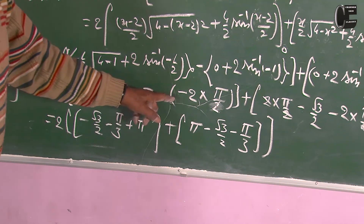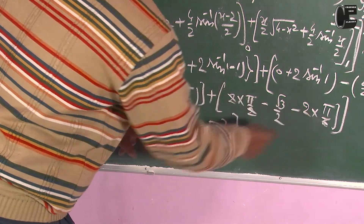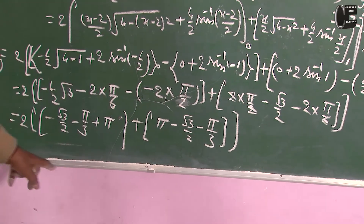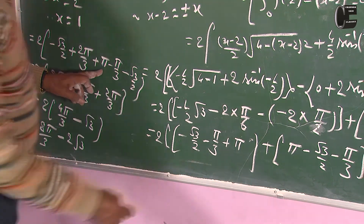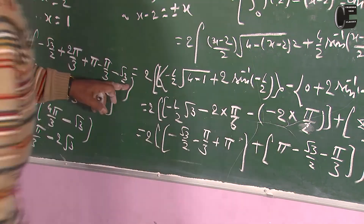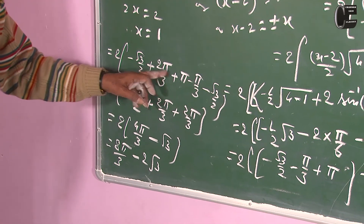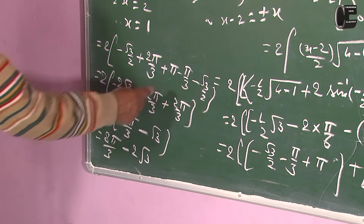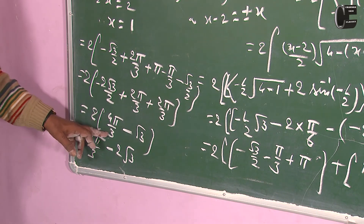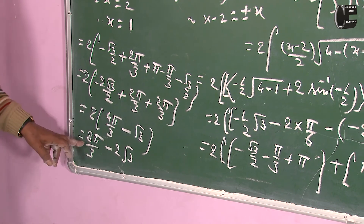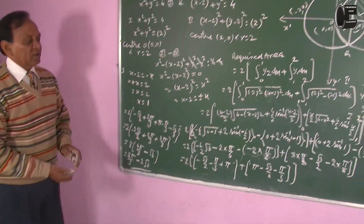Multiplying by 2, we get 8π/3 minus 2 root 3. This will be our answer. We are given 2 circles: x squared plus y squared equal to 4, and (x minus 2) whole squared plus y squared equal to 4. They are congruent circles — radius is the same but centers are different: (0, 0) and (2, 0). The graph shows this with the area to be determined being 8π/3 minus 2 root 3.